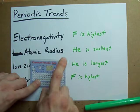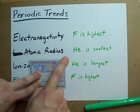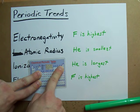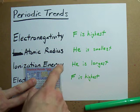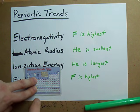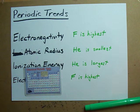But this is how I like to remember what the periodic trends are: electronegativity is highest here, He and these are the smallest atoms, they have the highest ionization energy and the highest electron affinities. Good luck.